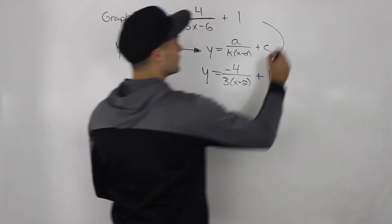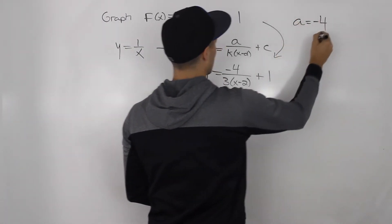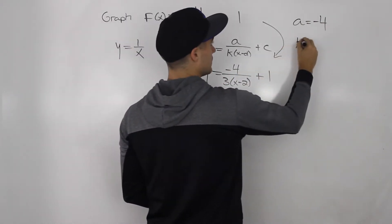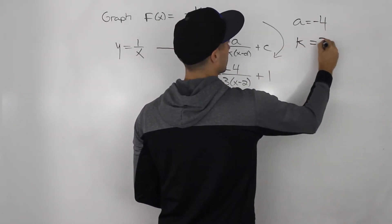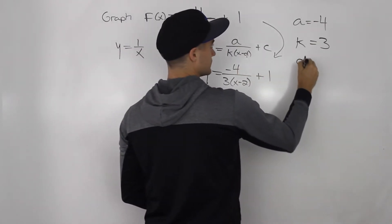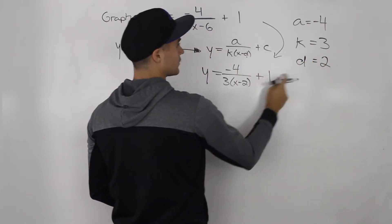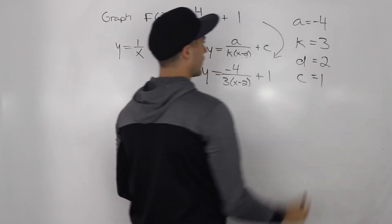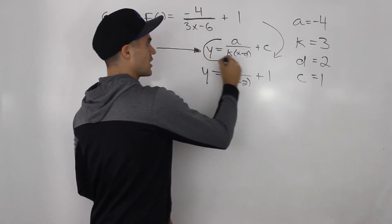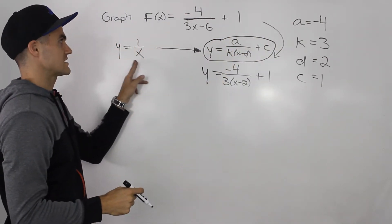So we can identify: the a value is -4, the k value is 3, the d value is 2, and the c value is 1. You'll want to write this general transformation format down for 1/x — it's not as intuitive as other parent functions, but when you transform 1/x it should always be in this format.